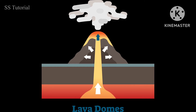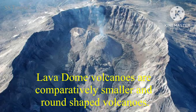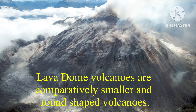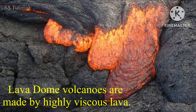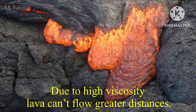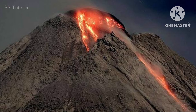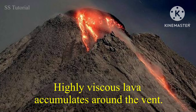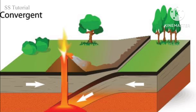Lava dome volcanoes are comparatively smaller and circular shaped volcanoes. They are made of highly viscous lava. Because the lava is thick and sticky, it cannot flow very far, so it accumulates around the vent. Lava dome volcanoes are very common in the convergent plate boundary.